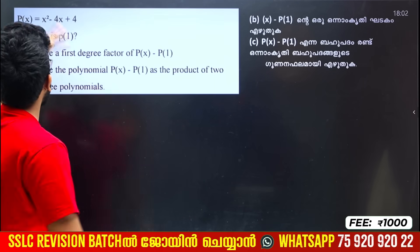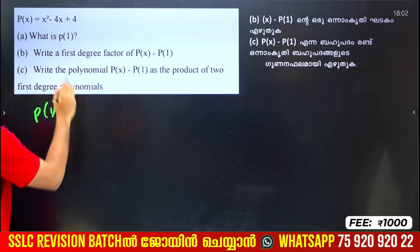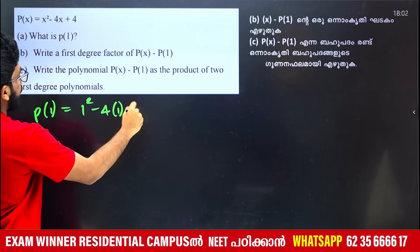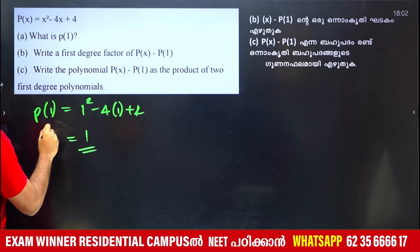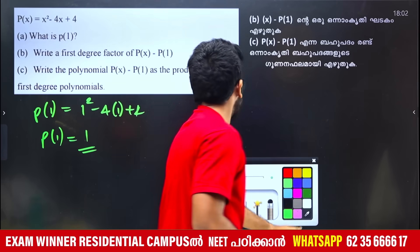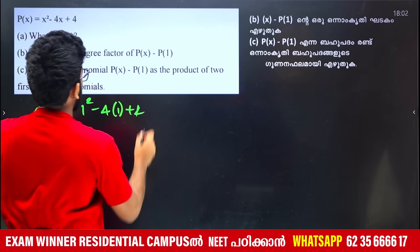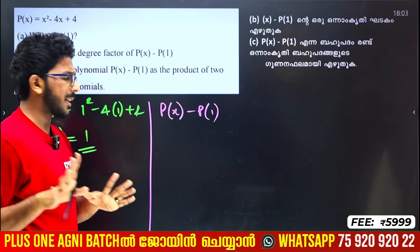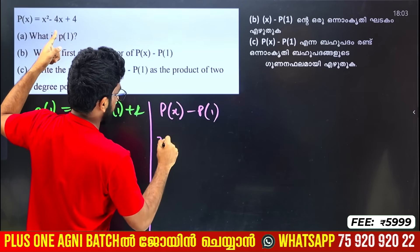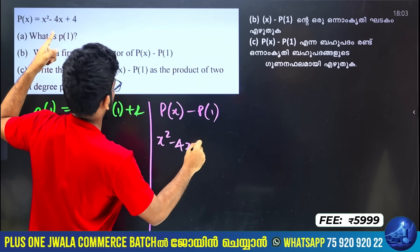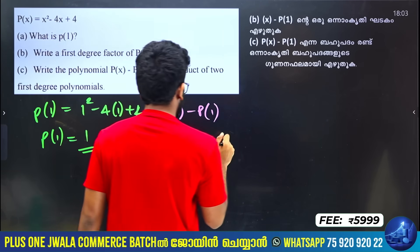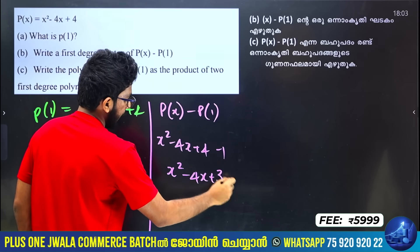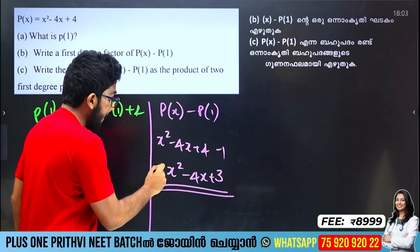x² minus 4x plus 4 — find P of 1. Substituting x equals 1: 1 minus 4 plus 4 equals 1. So P of 1 equals 1. Now find the first-degree factor of P of x minus P of 1. P of x minus P of 1 equals x² minus 4x plus 4 minus 1 equals x² minus 4x plus 3.